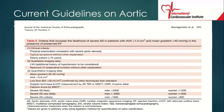If the mean gradient is between 30 and 40, the valve area is less than 0.8, and you have a low flow situation — low flow is defined as a stroke volume index less than 35 mLs per meter squared — one of the most important features is if you see a lot of calcification on multi-slice CT scan. For men, if the Agatston score is greater than 2,000, it's probably severe. For females, if it's greater than 1,200.